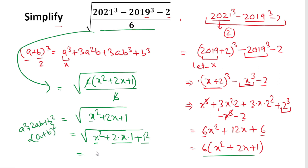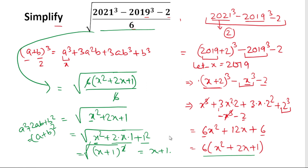So we can write it as (x+1)², and since it is under a square root, the square root and the square cancel. The result is x plus 1. Since we let x equal 2019, the value is 2019 plus 1, which equals 2020. So 2020 is the answer to this question.